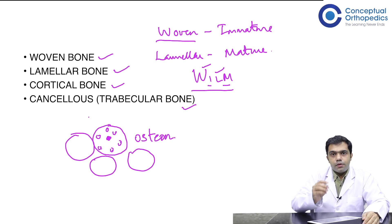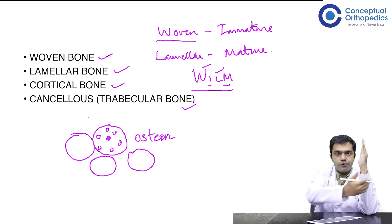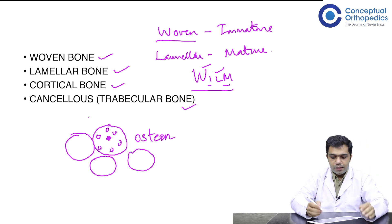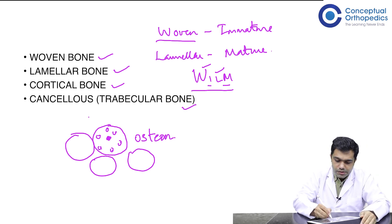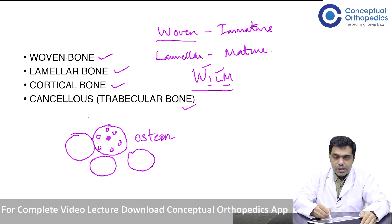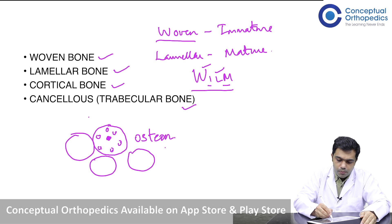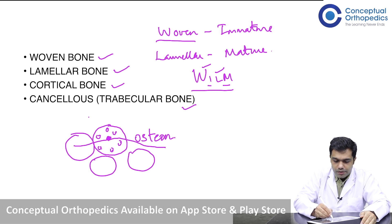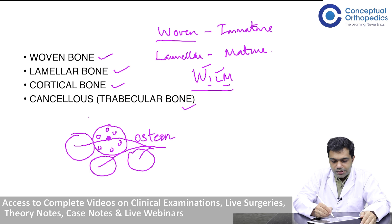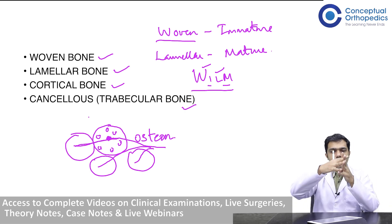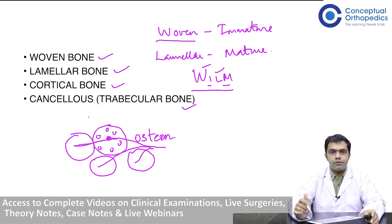From outside to inside there are also canals known as Volkmann's canals. These Volkmann's canals have blood vessels that connect each Haversian canal, making a very strong structure so that the bone doesn't fracture.